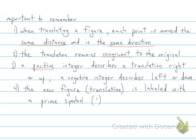A positive integer, whenever you're translating, indicates or describes a translation either right or up. A negative integer will describe a situation where you're translating either left or down. And then finally, the new figure, or translation, is going to be labeled with a prime symbol.